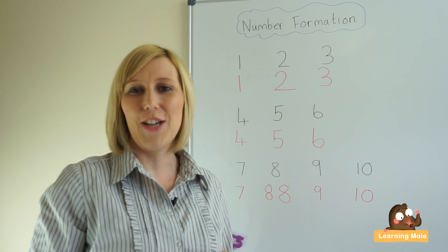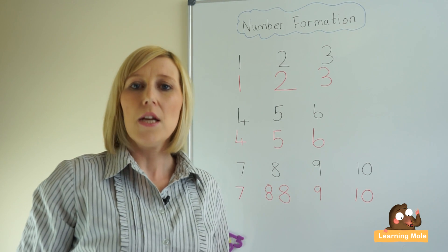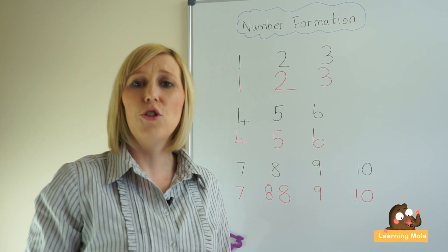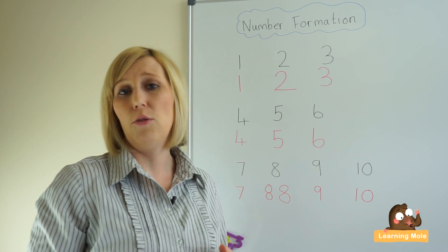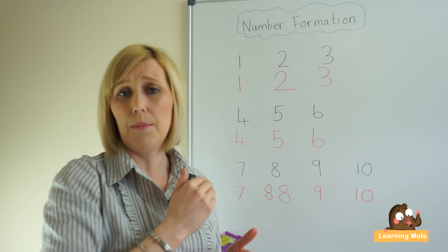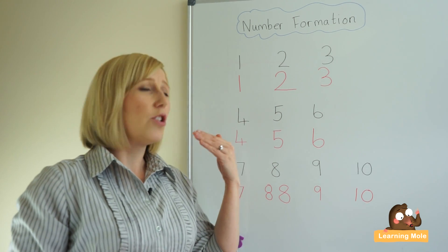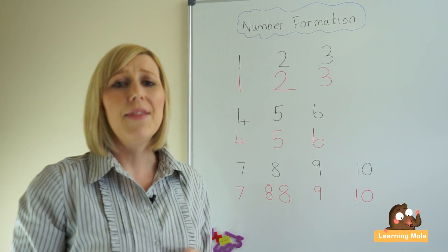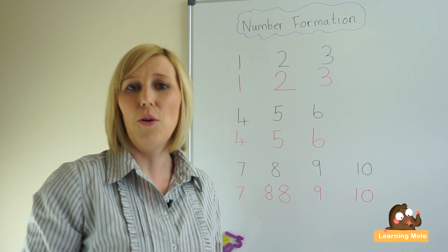Once you feel your child is confident and secure, you want to start introducing pen and paper. The first step is to provide the child with the number to trace over. A really good thing to have is a yellow felt tip pen or colouring pencil — you write the numbers for them and then allow them to trace over, encouraging them to start in the right place, finish in the right place, and form those letters correctly. Then from that you can start to move on and allow your child to have a go themselves.